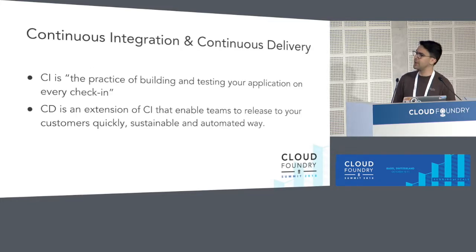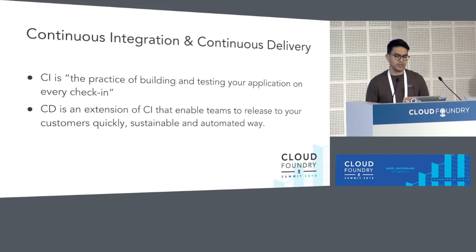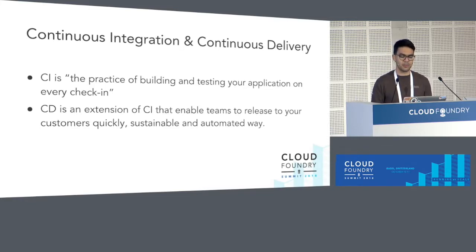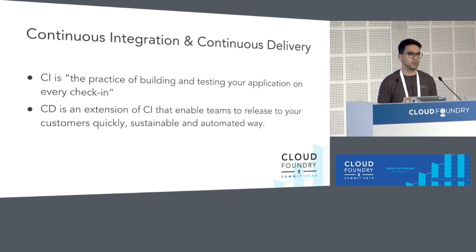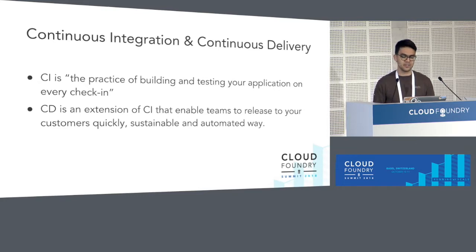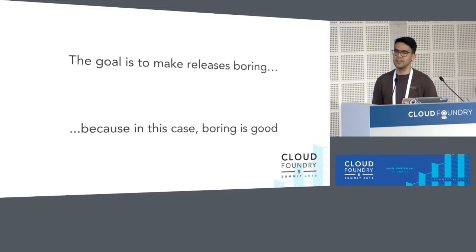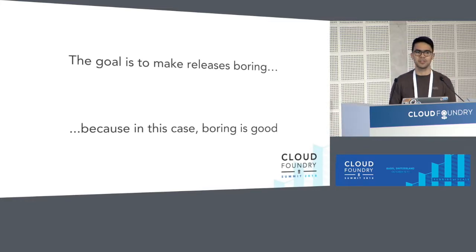Just to define the terms: continuous integration is the practice of building and testing your application on every commit. So every time someone pushes code to your repository, something will happen in your pipelines. CD, or continuous delivery, is an extension of that — it enables your team to release software quicker in a more sustainable and automated way. The goal of both CI and CD is to make releasing software boring, because boring is good. You don't want surprises when pushing code to production; you want it to go smoothly in a reliable process.